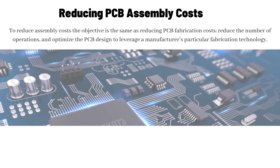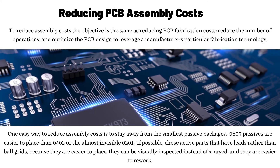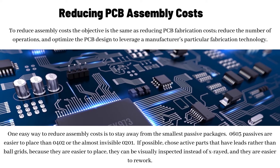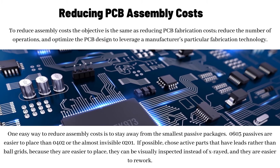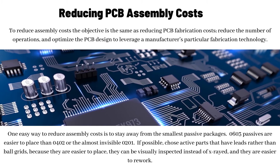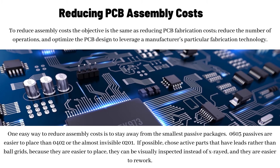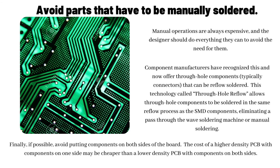Reducing PCB assembly costs: to reduce assembly costs, the objective is the same as reducing PCB fabrication costs — reduce the number of operations and optimize the PCB design to leverage a manufacturer's particular fabrication technology. One easy way to reduce assembly costs is to stay away from the smallest passive packages. 0603 passives are easier to place than 0402 or the almost-invisible 0201. If possible, choose active parts that have leads rather than ball grids, because they are easier to place, can be visually inspected instead of X-rayed, and are easier to rework. Avoid parts that have to be manually soldered. Manual operations are always expensive, and the designer should do everything they can to avoid the need for them.